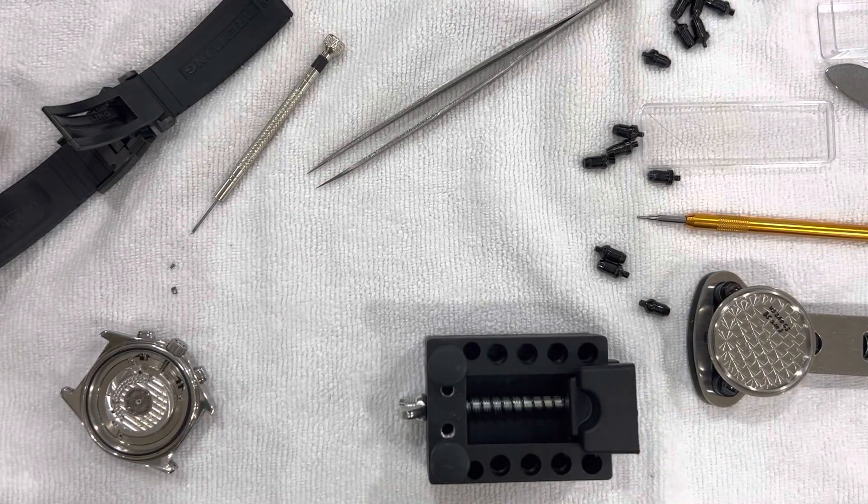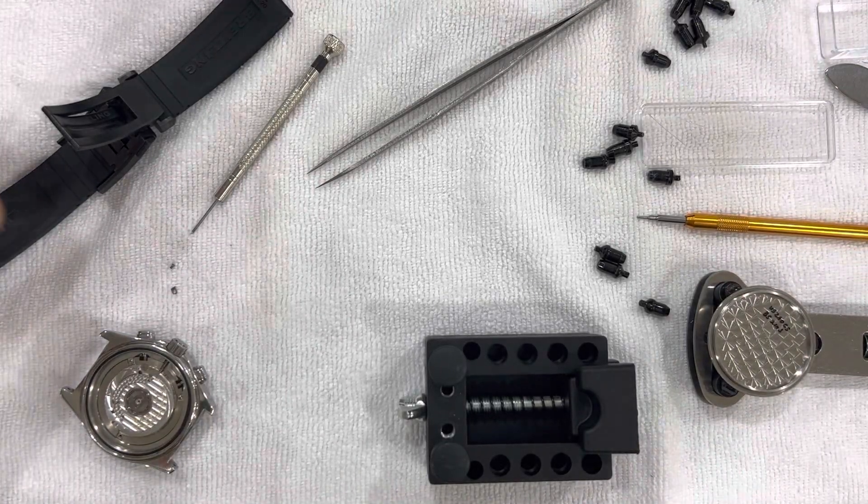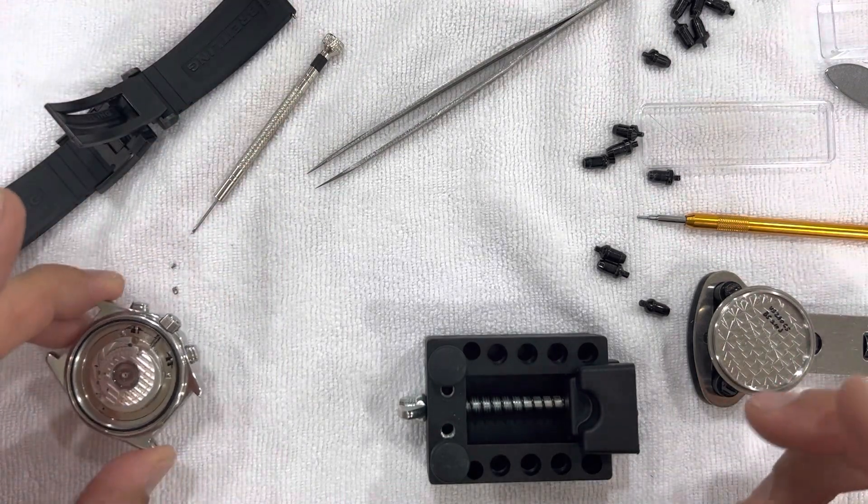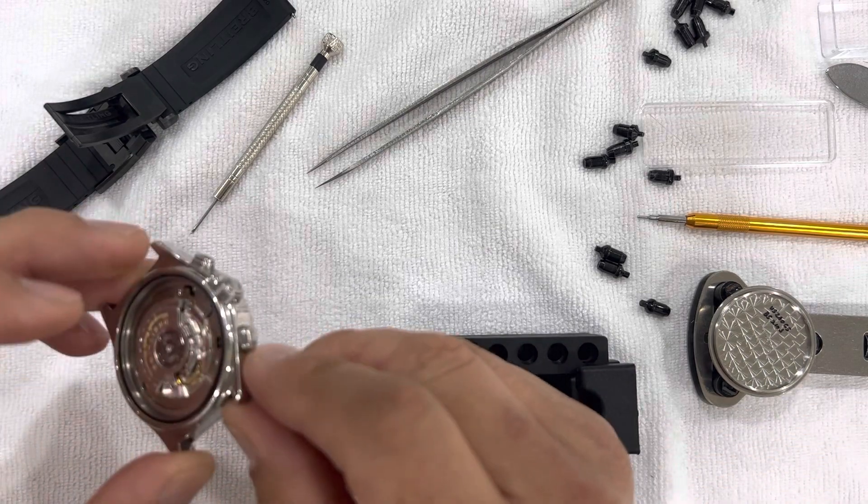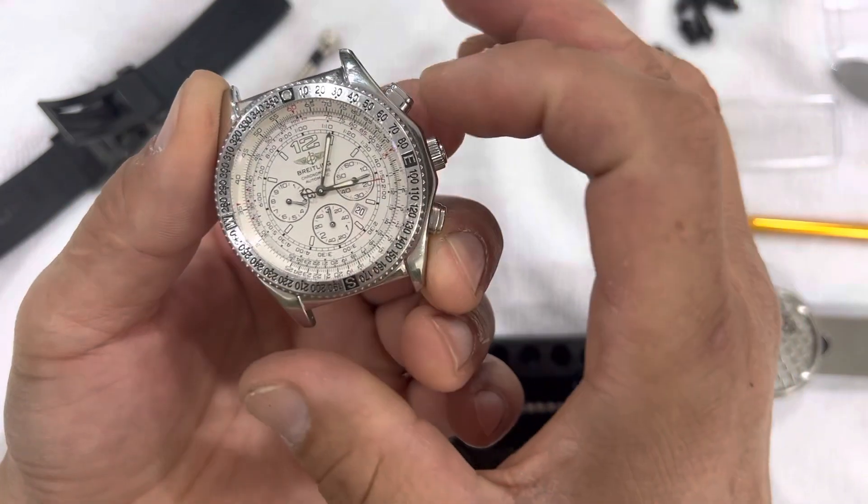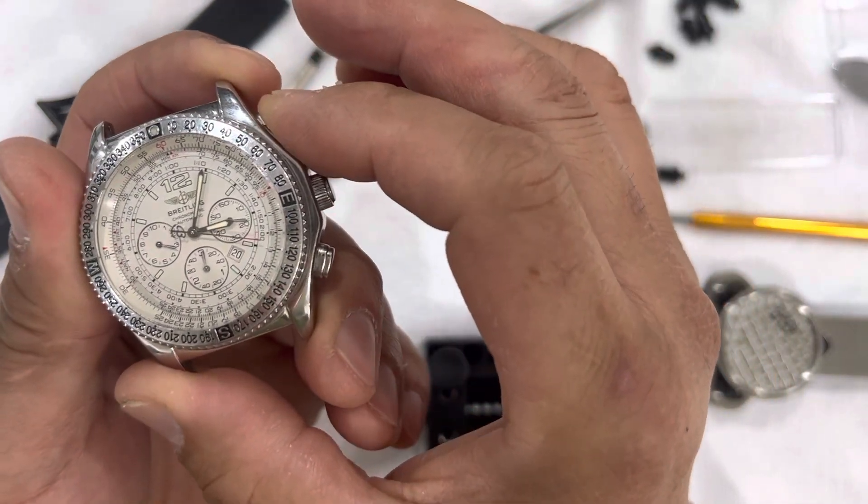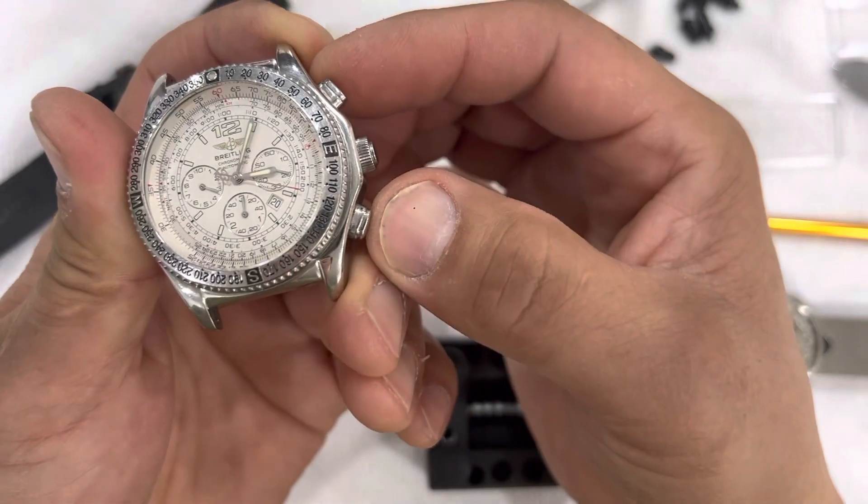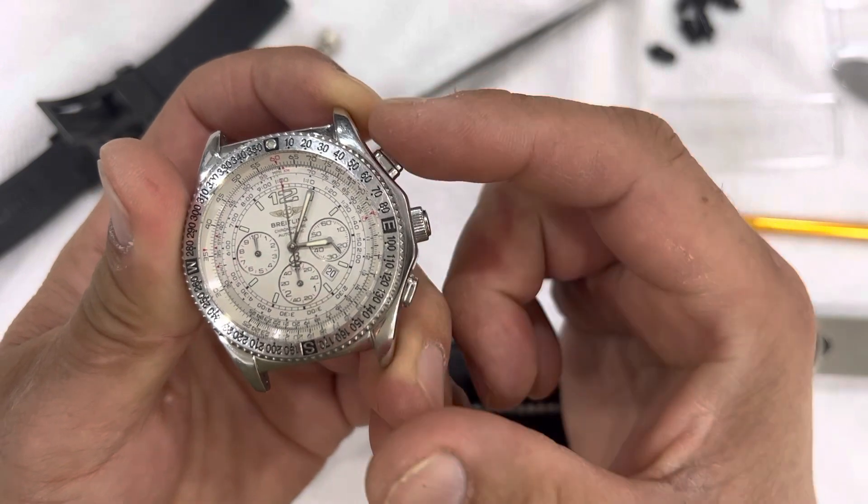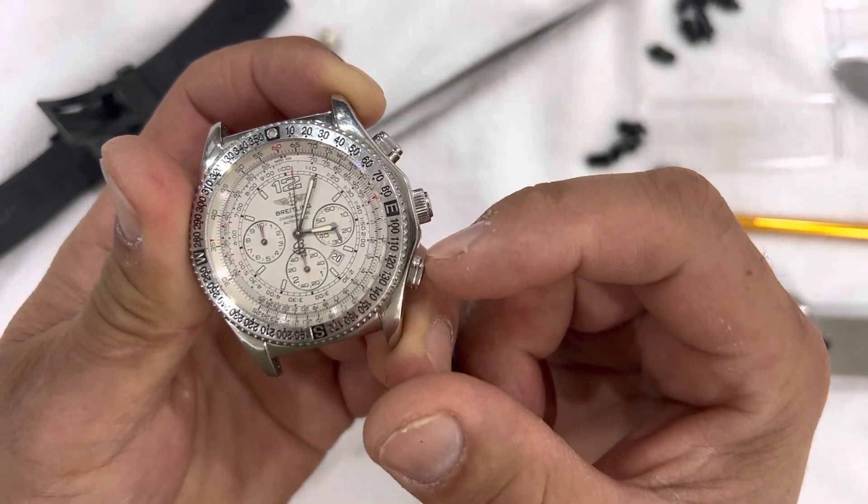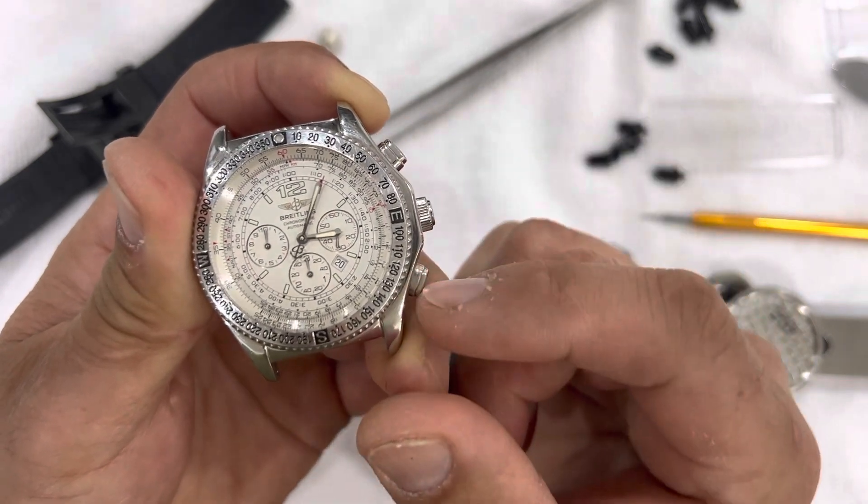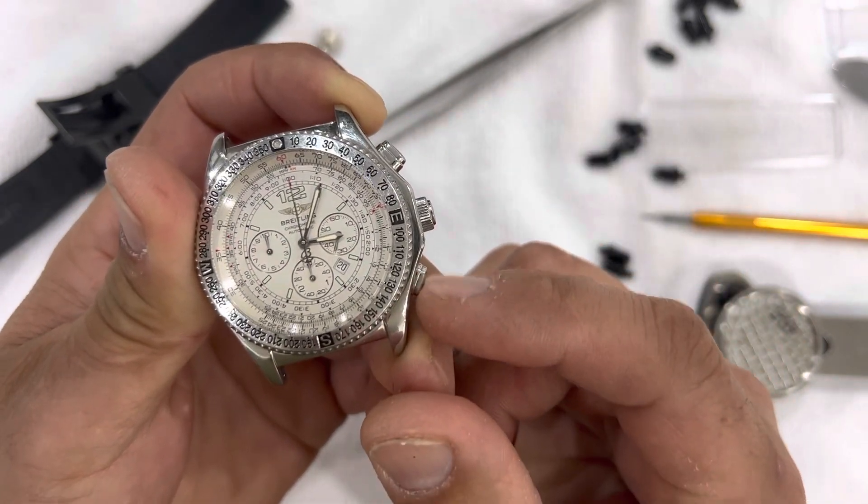So I just started taking apart my Breitling, this is the Breitling B2. The reason why I'm taking this apart is because recently my reset pusher doesn't pop back out, and this is the start button. When you push to start, it actually resets on its own, and then you stop the watch and can reset it, but the button doesn't pop back out.